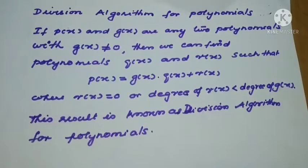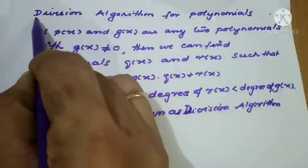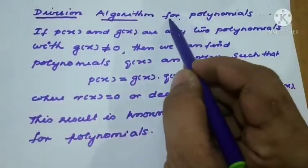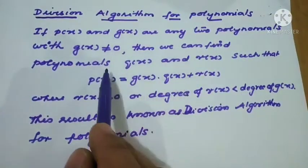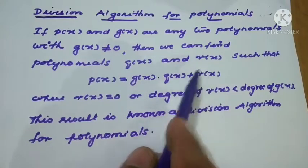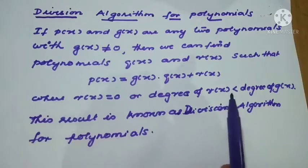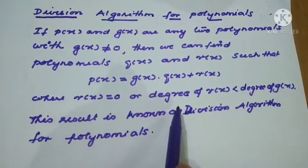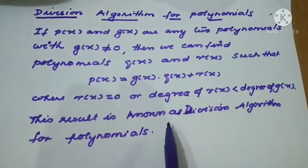Good morning children. Division algorithm for polynomials: if p of x and g of x are two polynomials with g of x not equal to zero, then we can find two polynomials q of x and r of x such that p of x equals g of x into q of x plus r of x, where r of x equals zero or the degree of r of x is less than the degree of g of x.